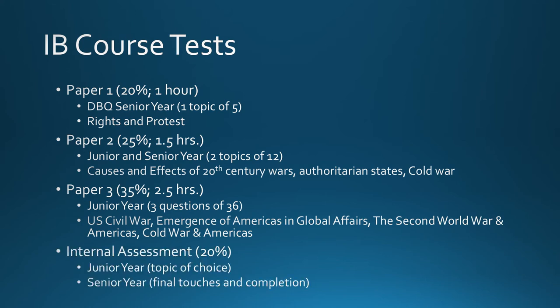The last part of your assessment is a little bit different — it is referred to as the internal assessment. As I said in module one, this is a research paper worth 20% of your grade. In your junior year, we'll be picking a topic and working towards completion of it. By the end of your junior year, you will have a working copy that has been reviewed with my edits and feedback. In your senior year, we'll add the final touches to the IA, do some peer review and peer workshops, and then complete it. I will give it a score, but more importantly, it will be sent to IB, who will verify my score to make sure it's accurate and consistent with the rubric and mark bands.